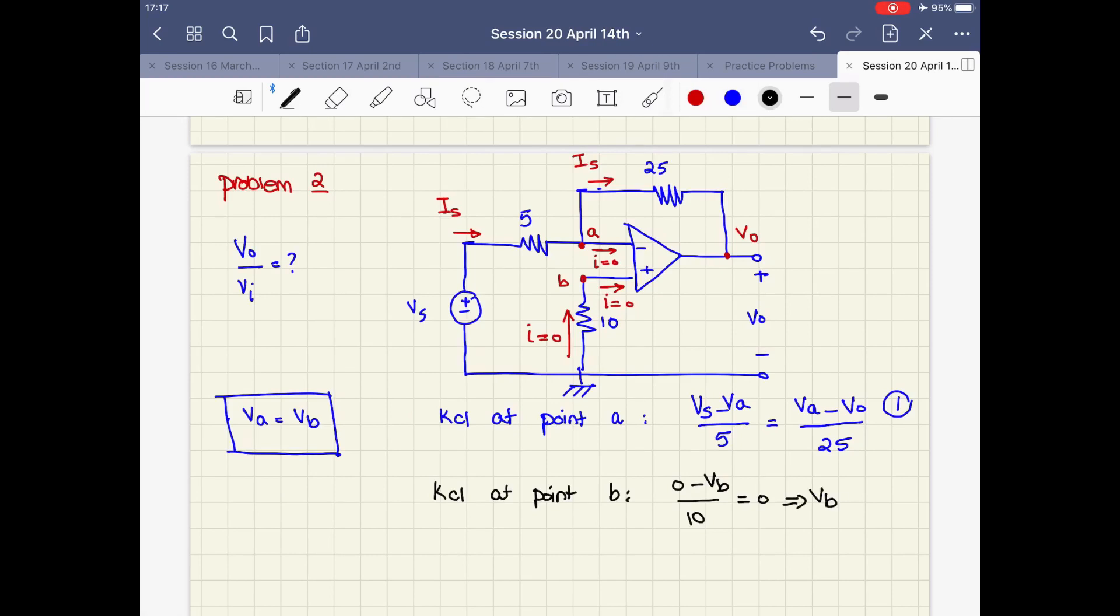When vb is zero, va is also equal to zero. So we can say that va equals zero. When va is equal to zero, this is zero and this is zero.